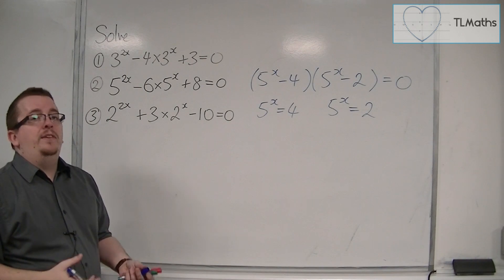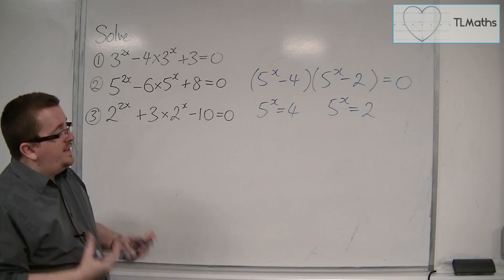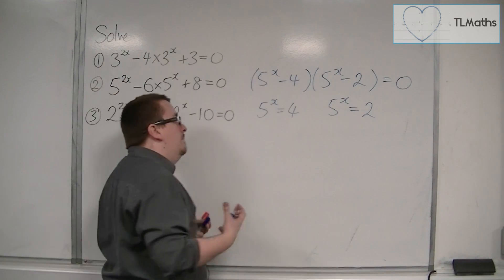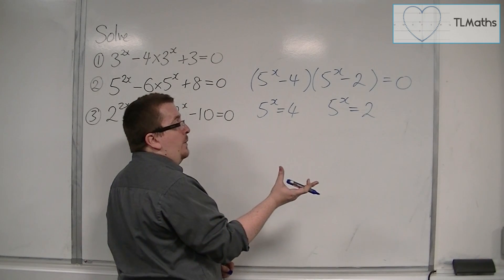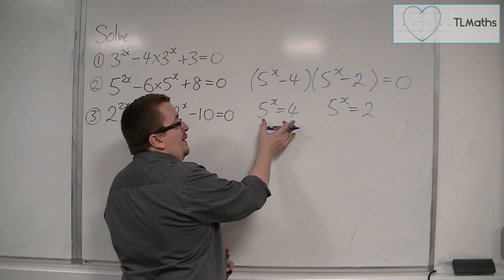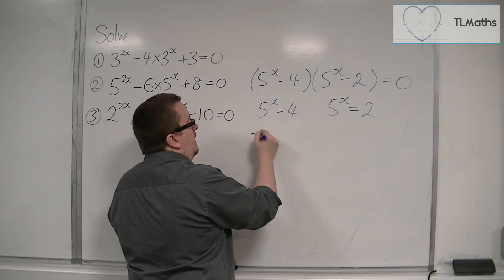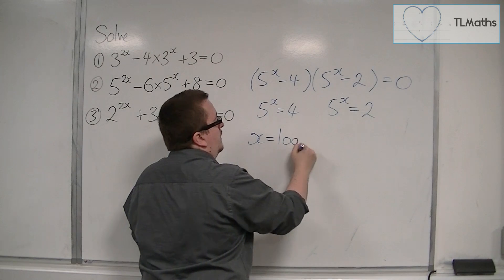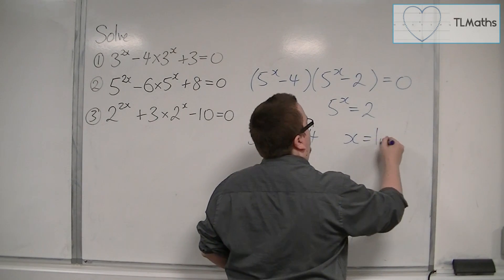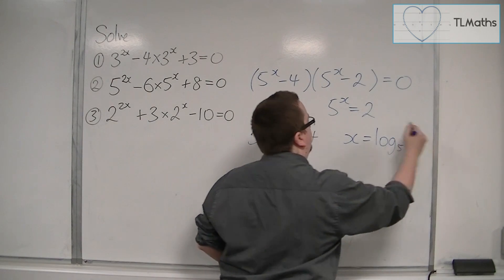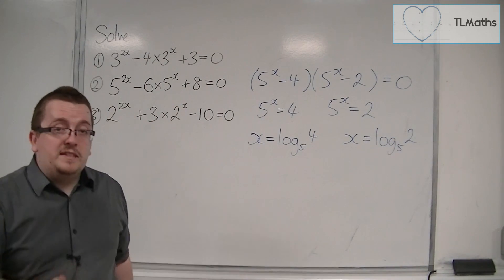Now in both these cases they are exponential equations. They don't have simple answers, so we must write them. We can either log both sides and work it through that way, or we can write them directly into logarithmic form. So from this exponential form x must be equal to log base 5 of 4 or x is equal to log base 5 of 2. Now these are the exact answers.